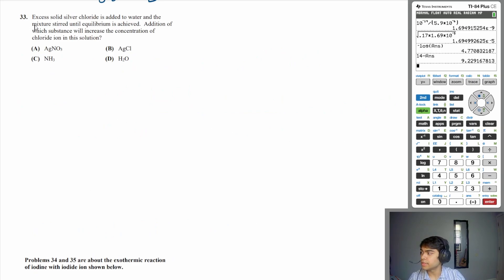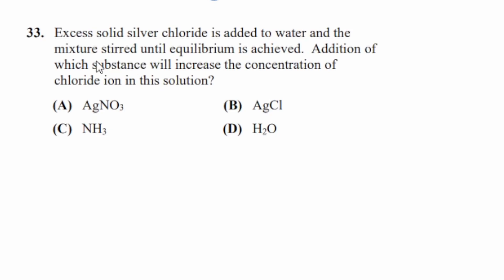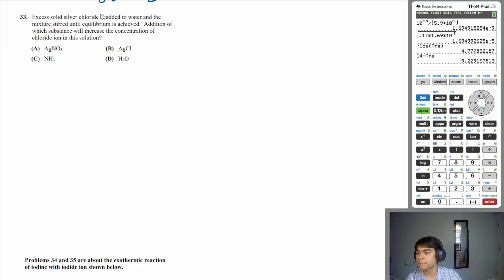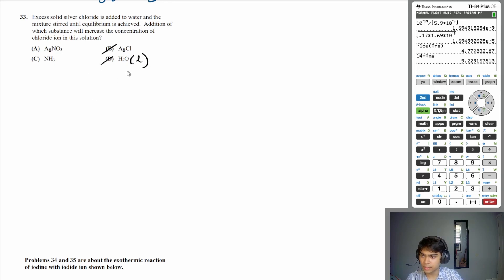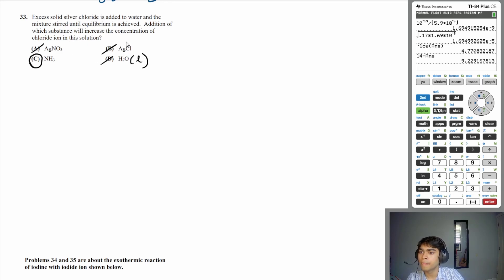Let's move on to question 33. Excess solid silver chloride is added to water and stirred until equilibrium. Which substance will increase the concentration of chloride ion? Silver chloride is insoluble, so adding more AgCl or water won't help, and AgNO₃ won't either. However, ammonia (NH₃) is a well-known reagent that increases the solubility of silver chloride, producing more chloride ions — so ammonia is the answer.